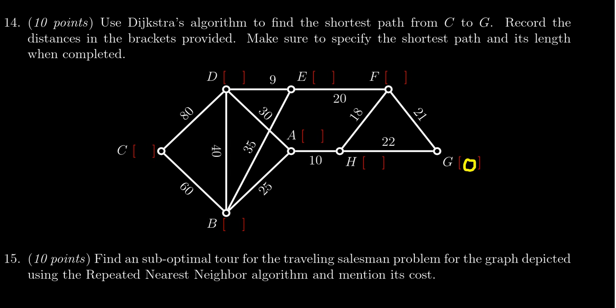Next we're gonna look at all of the neighbors to G here. There's F which is a distance of 21 from G, so we write 21 right there. There's H right here which is 22. So that means we're now done at G. We visited everything there.